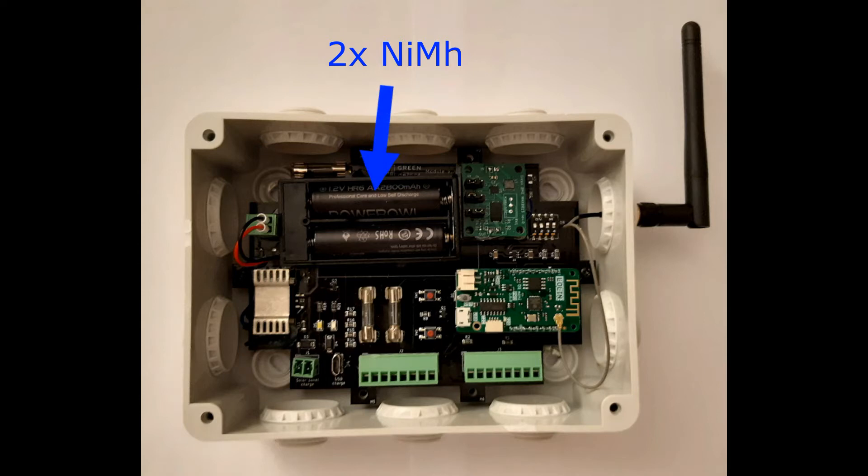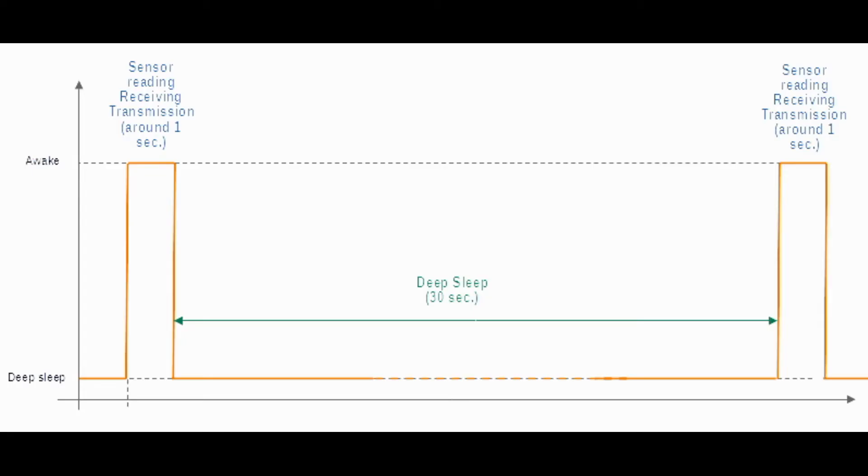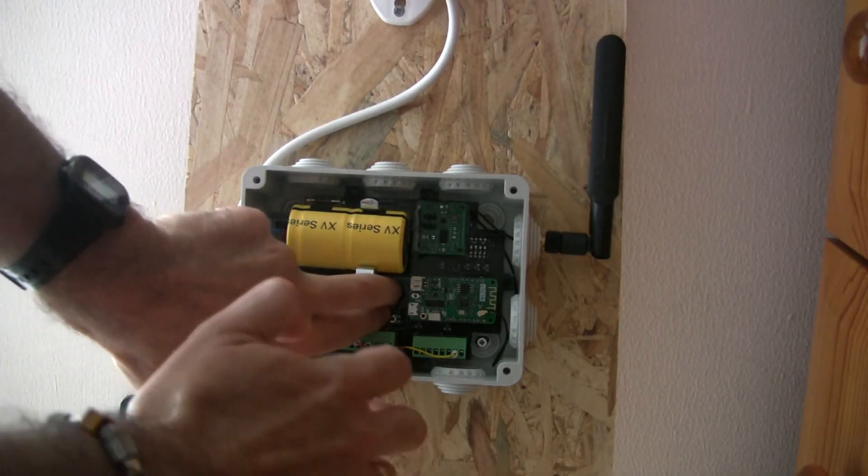The module works according to the following steps: 1. Sensor signal acquisition. 2. Receiving data from the previous module. 3. Data transmission to the next module. 4. Deep sleep mode for 30 seconds. All modules connected to the network are synchronized with each other.